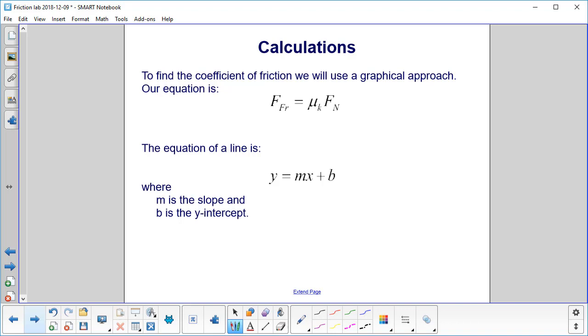To find the coefficient of friction, we will use a graphical approach. Our equation is friction is mu k times normal, and the equation of a line is y equals mx plus b, where m is the slope and b is the y-intercept.